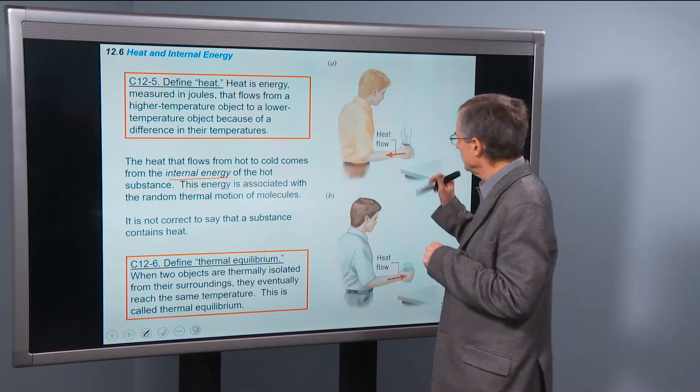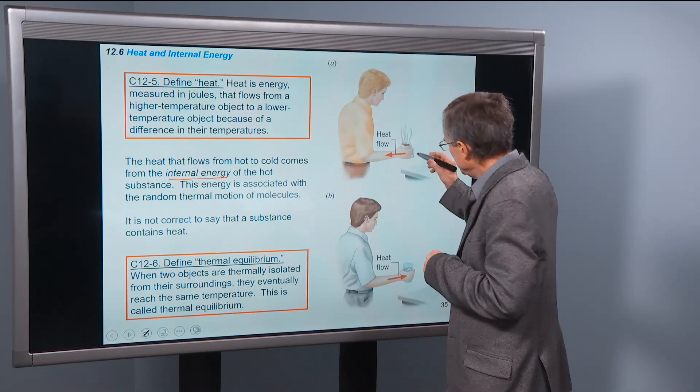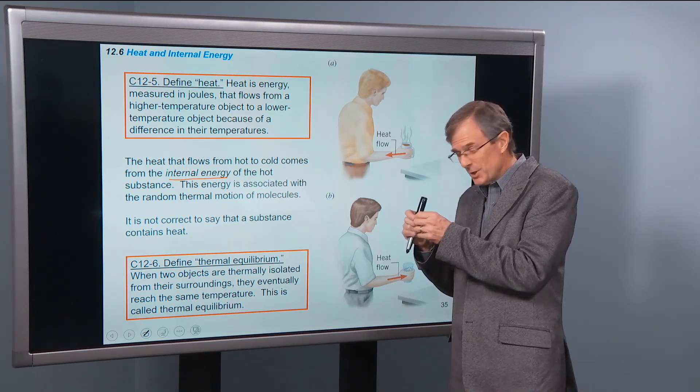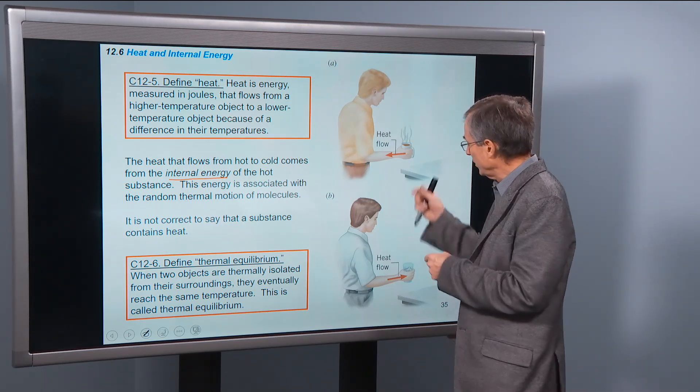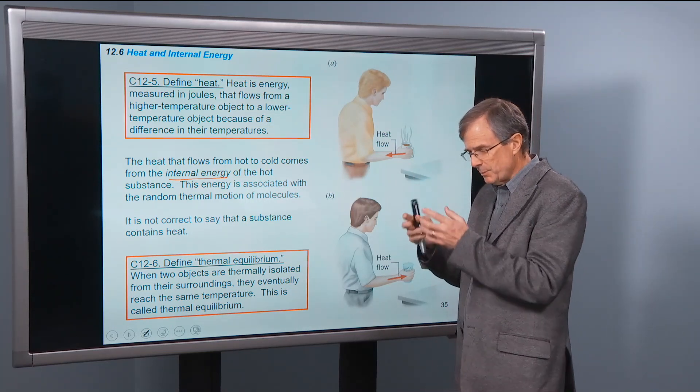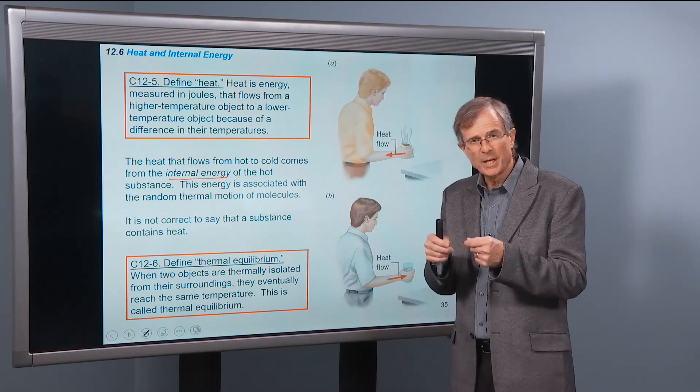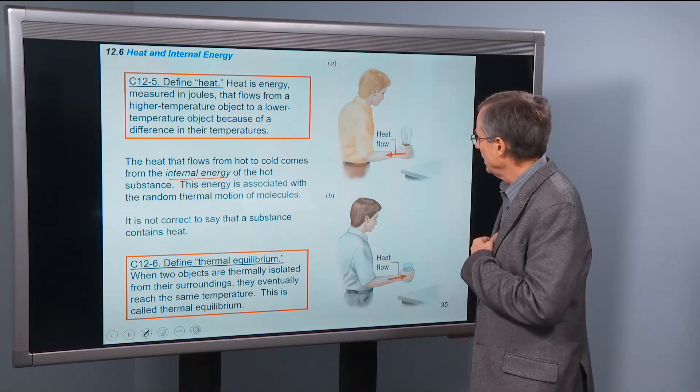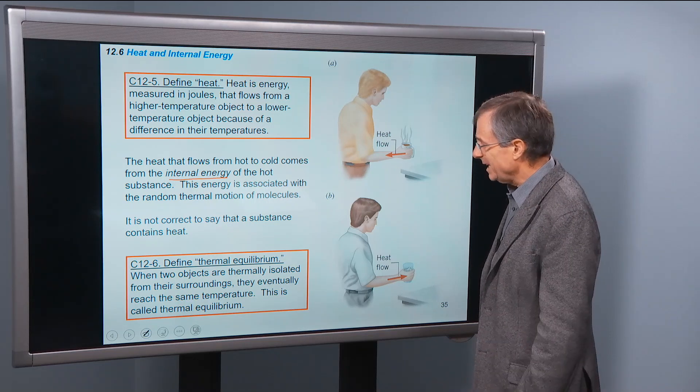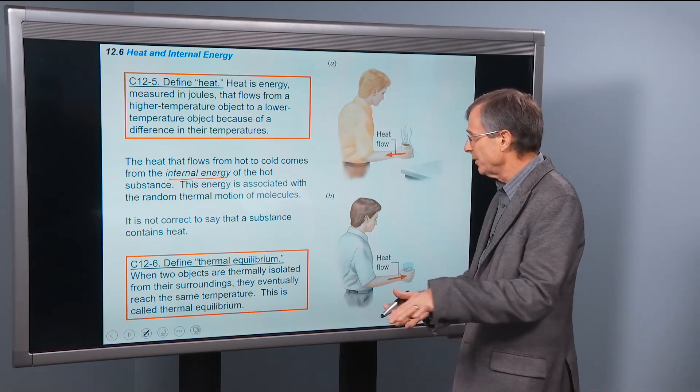So what happens with this particular example is that the hot molecules of hot chocolate are bouncing around a lot. They transfer some of that high energy bouncing to the cup, which causes the molecules in your hands to bounce around at a higher rate of speed. And that gives you this heat flow. It's a transfer of energy.